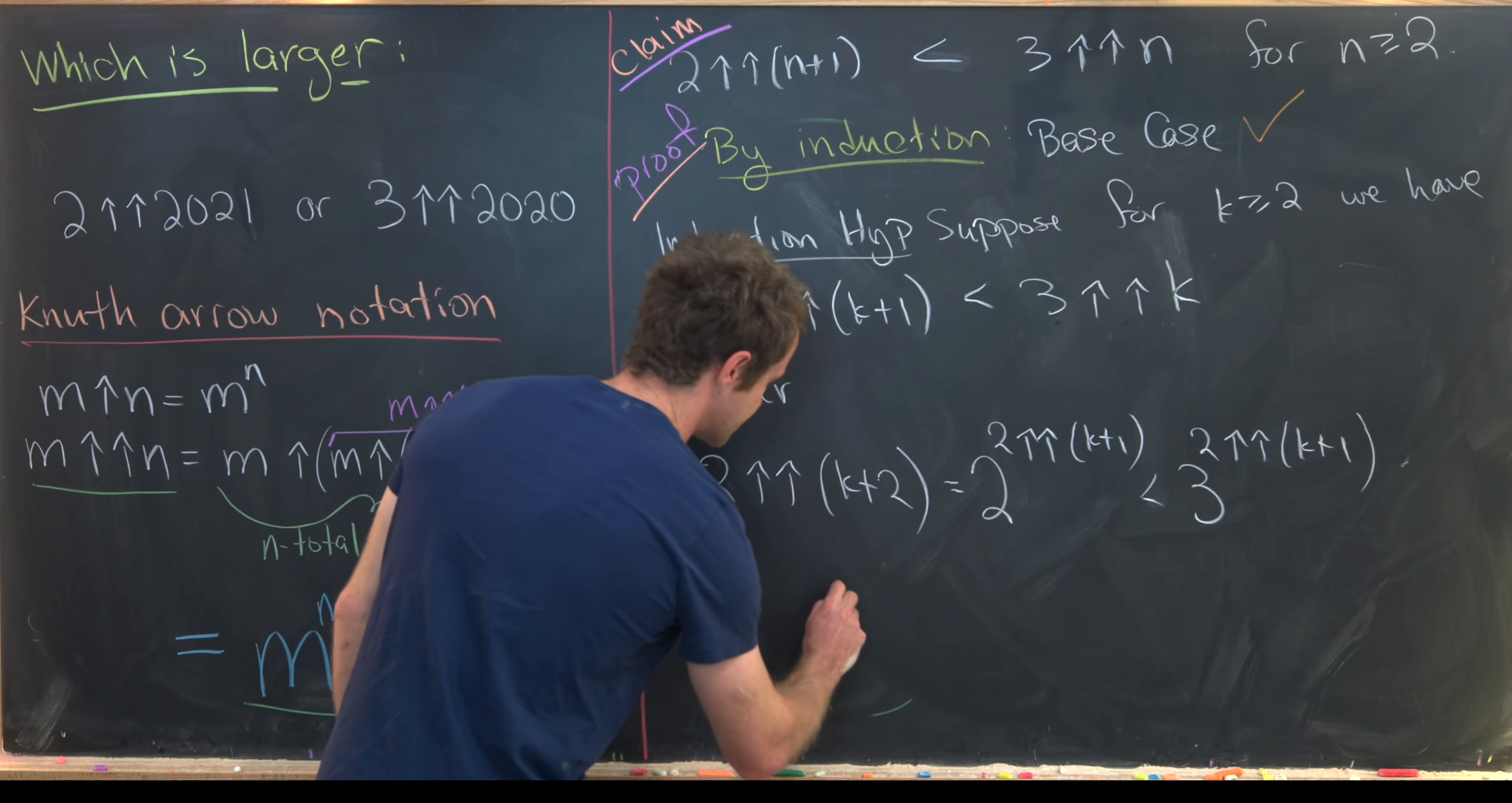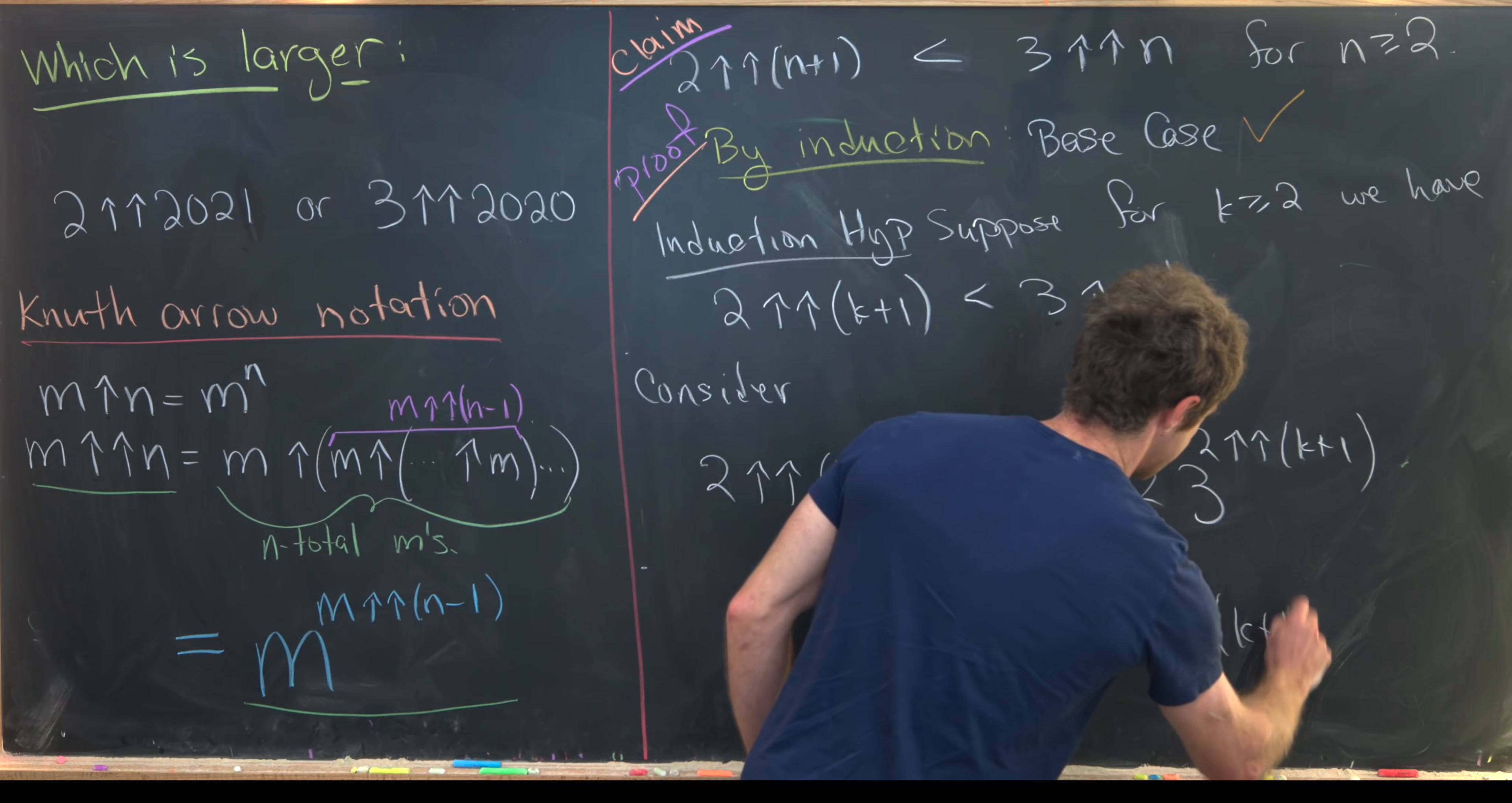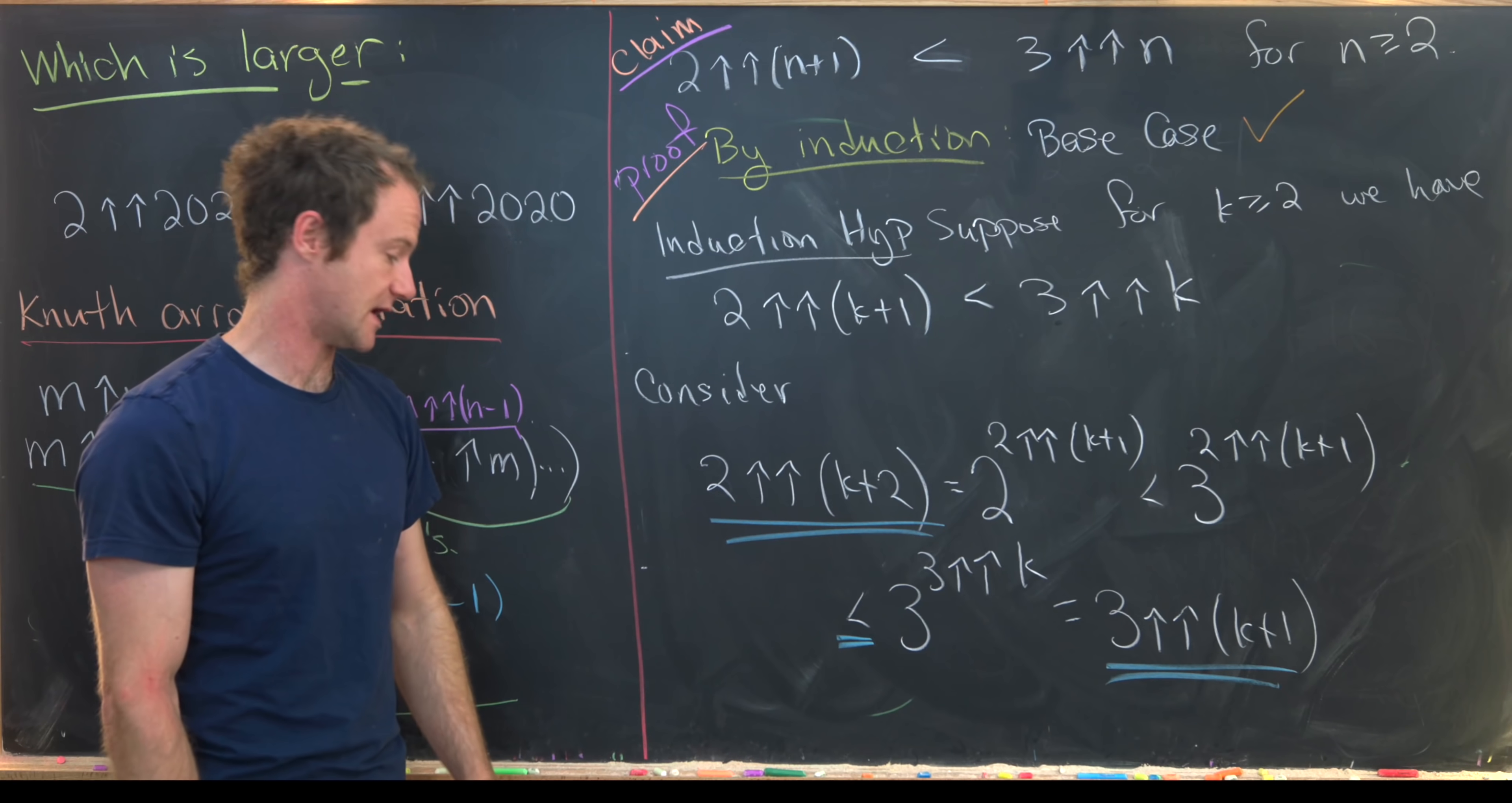And then by our induction hypothesis we can replace the exponent with this and just carry the inequality in the correct direction. So this is going to be less than 3 to the 3 double up arrow k. But then again applying our recursive definition we have this is equal to 3 to the double up arrow k plus 1. So now if we read the extreme left and right hand side of this inequality we see that we've used our induction hypothesis to prove the next case which finishes the proof of this claim.